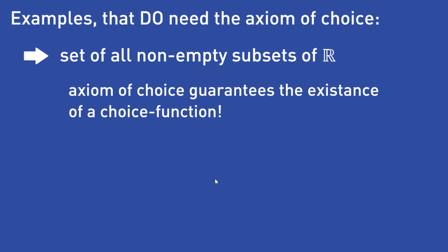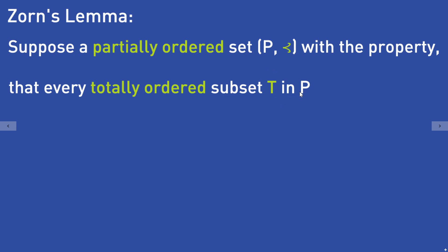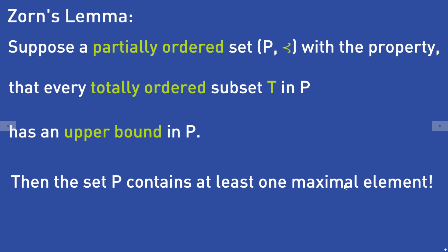Now let's take a look at things that follow from the axiom of choice. A very important statement that follows from it is Zorn's Lemma. It states: suppose you have a partially ordered set P with the property that every totally ordered subset T in P has an upper bound in P. Then the set P contains at least one maximal element. This is what Zorn's Lemma tells you.